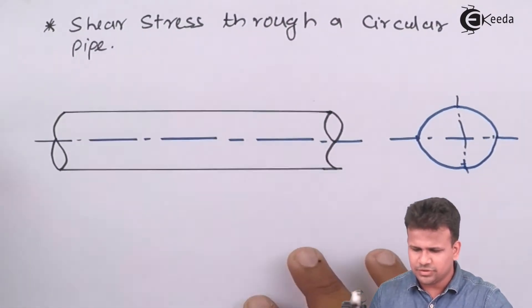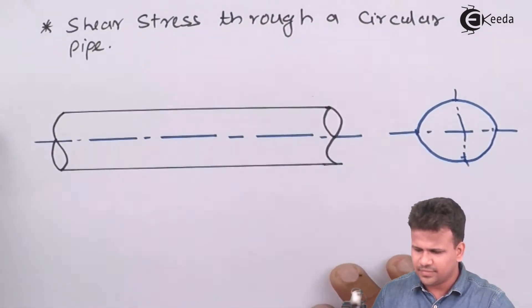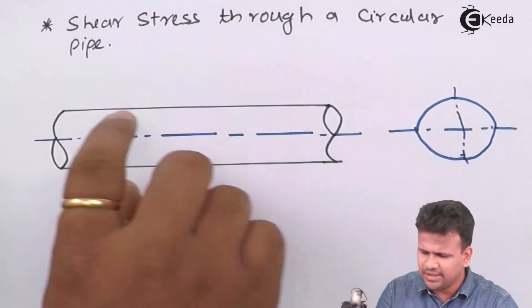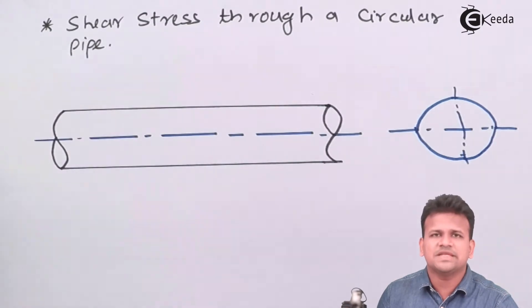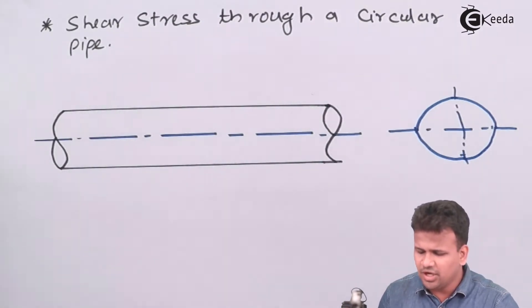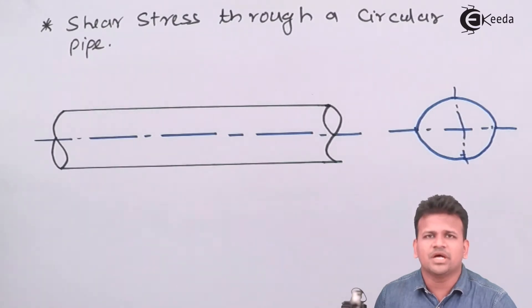Let us develop an equation of shear stress in a circular pipe having a laminar flow. For that, we have to consider a pipe of diameter D. This is the cross-sectional area — this is the front view of the entire pipe. We imagine that it is carrying a fluid having a laminar flow.